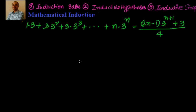Hi, welcome back. Hearty welcome to you. We are solving examples as part of mathematical induction. We have to prove: 1·3 + 2·3² + 3·3³ up to n·3ⁿ is equal to (2n−1)·3^(n+1) + 3, divided by 4.